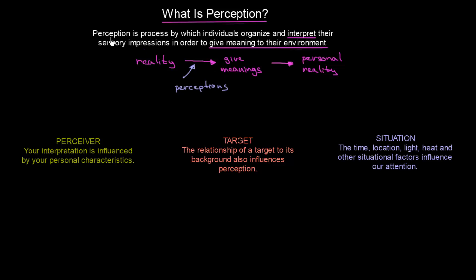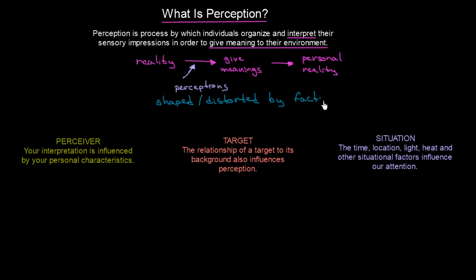Let's get back to our definition real quick. It is a process by which individuals organize and interpret their impressions in order to give meaning to their environment. Our perception of reality can be somehow shaped or sometimes distorted, and there can be some factors that cause this shaping or distortion.